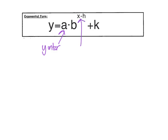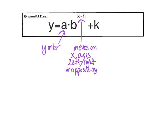The exponent is b to the power of x minus h. This h moves the graph left or right on the x-axis — just like vertex form with parabolas, it's in parentheses and uses the opposite sign. The k moves the graph up or down on the y-axis.